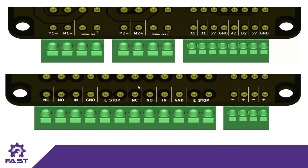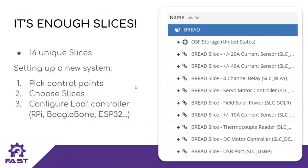On all the slices, the inputs and outputs are labeled. Rather than using screw terminals, I went with a press-fit design — you just plug in a solid core wire, and if you want to unplug it, you put a little screwdriver in the notch at the bottom and pull the wire out. On our Open Science Framework repository, we have 16 unique slices to perform various functions. Setting up a new BREAD system is as simple as picking your control points, going to the repository, picking the slices that meet those parameters, and then configuring your controller — whether a Raspberry Pi, a BeagleBone, or an ESP32. Really anything I2C-enabled could be used to control these slices.